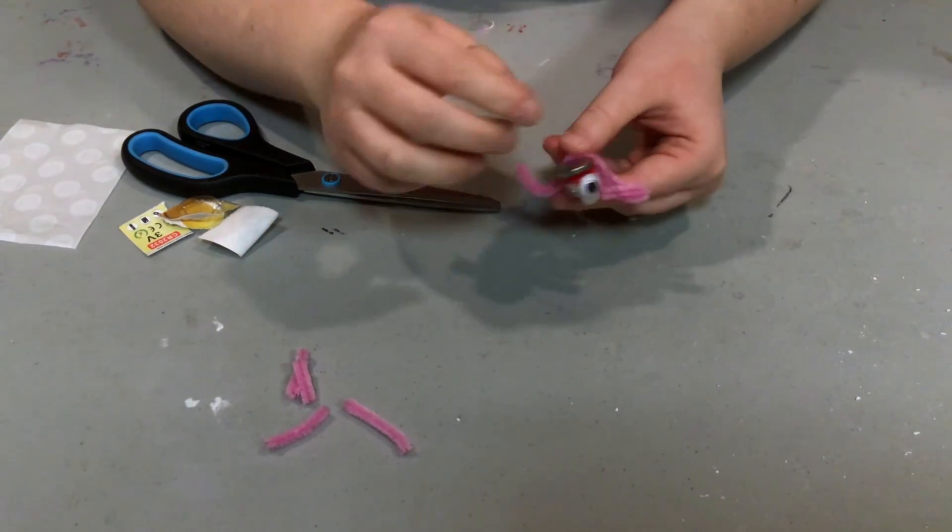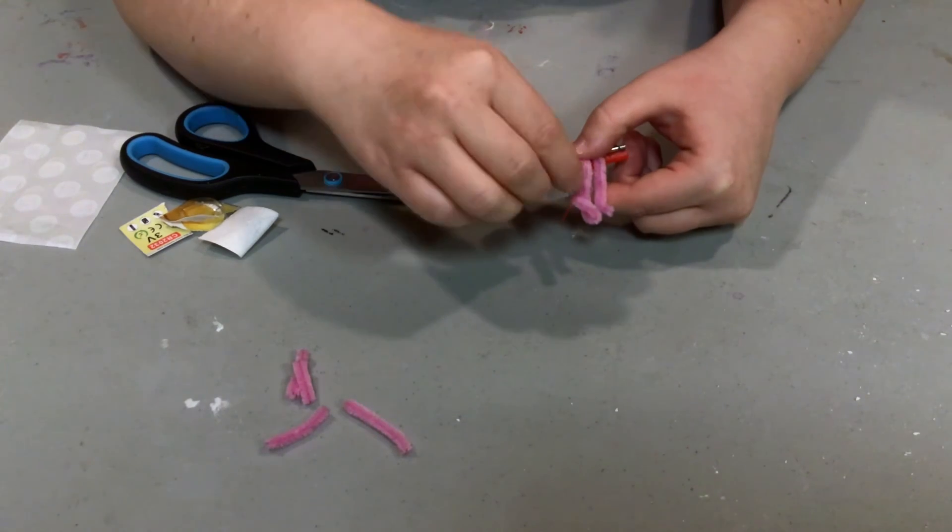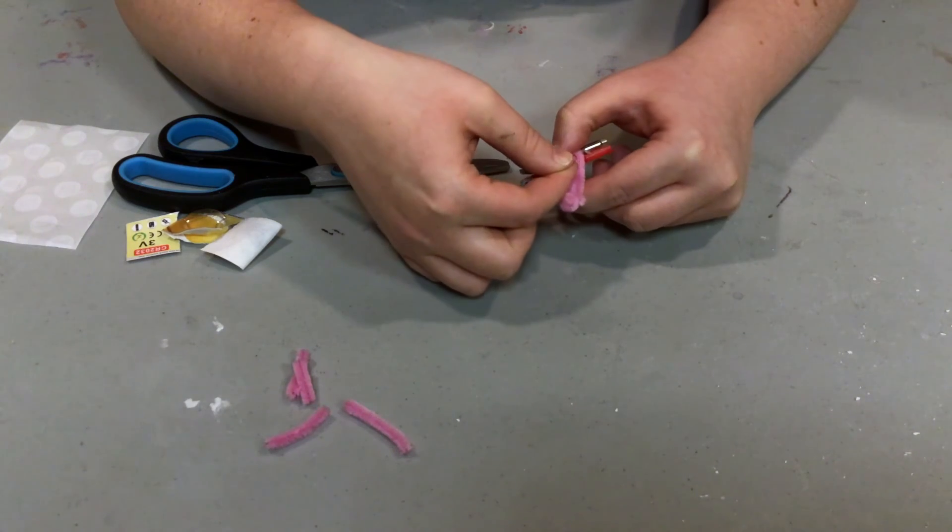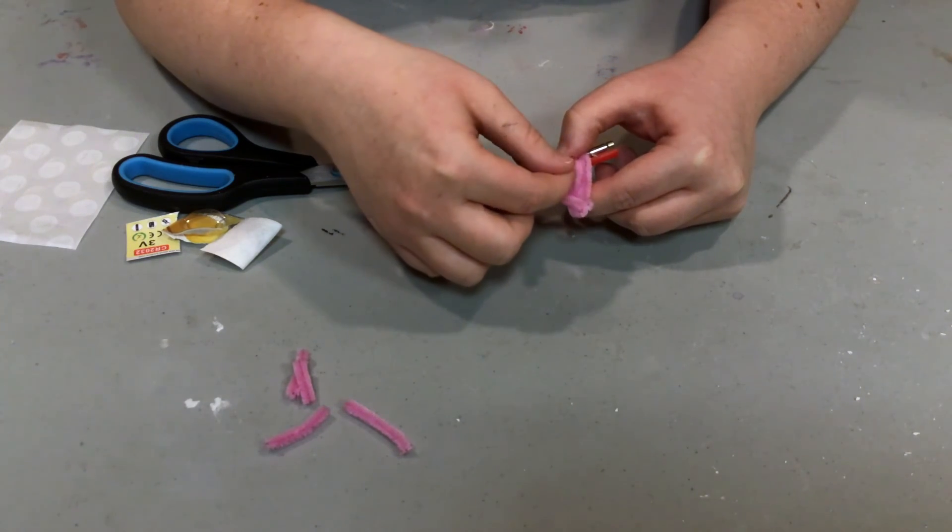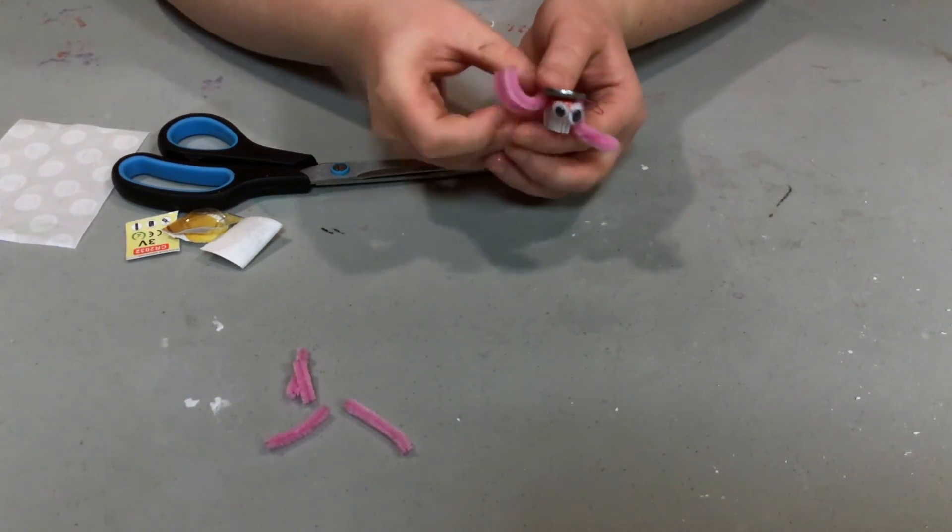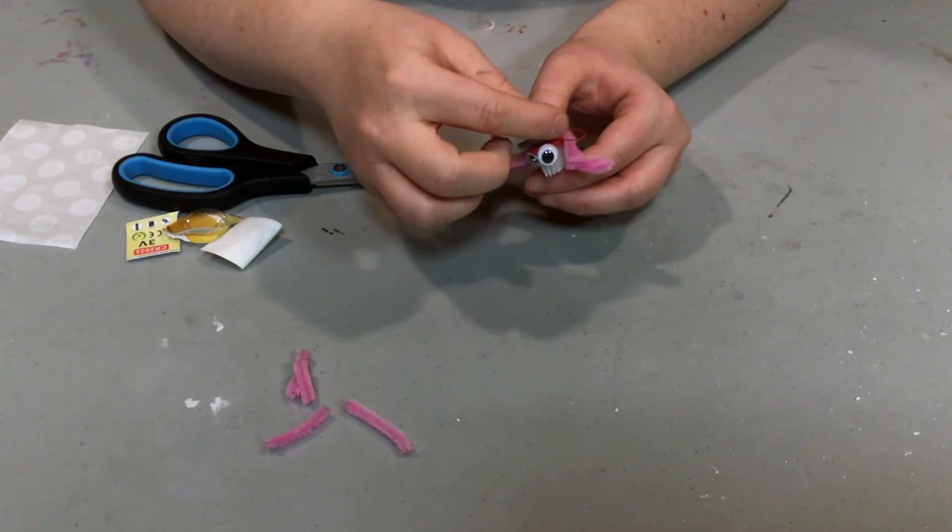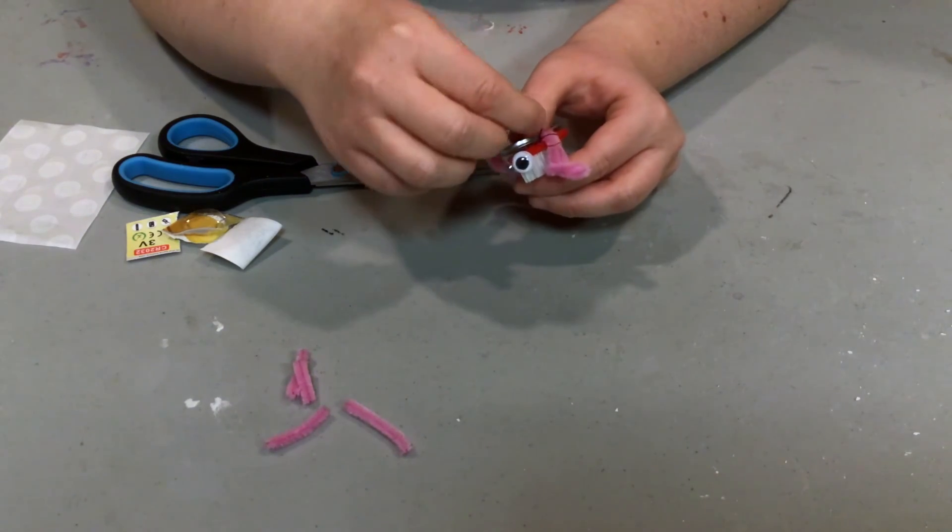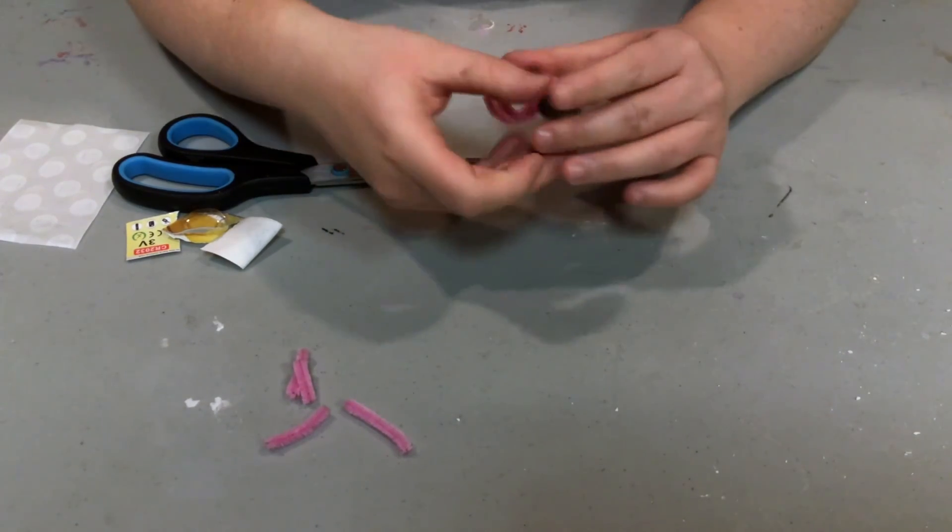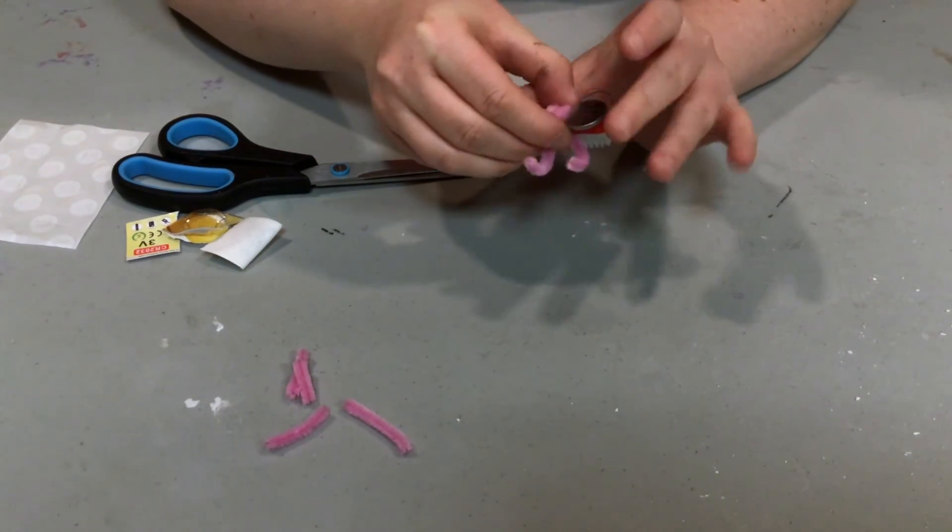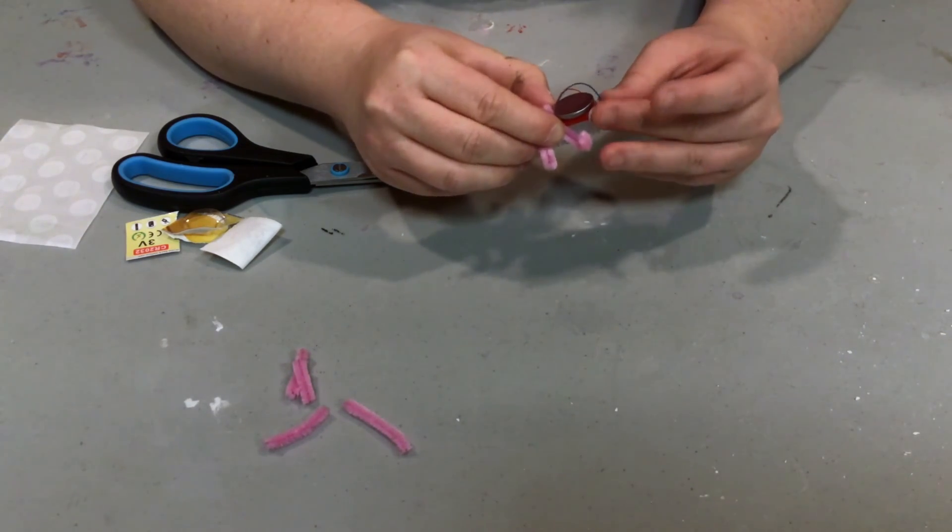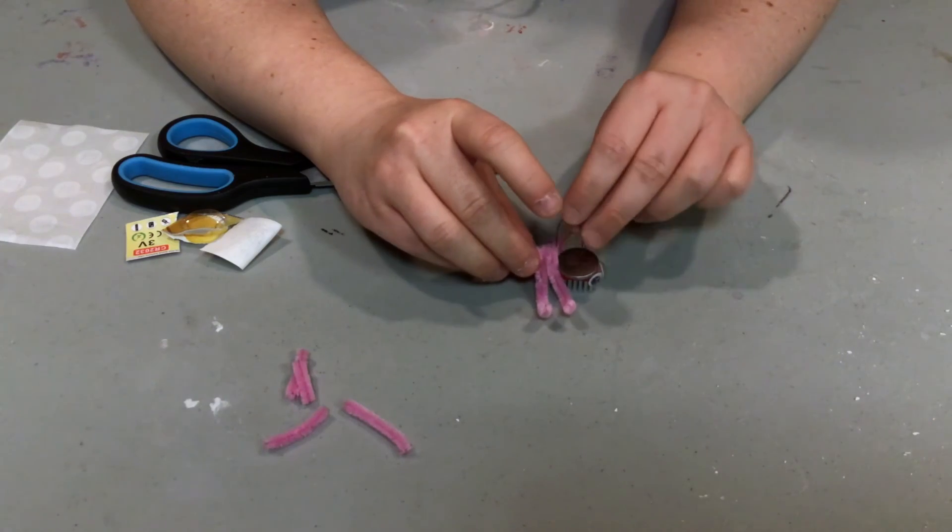Another thing you can do at this point is you can test your wires. So the trick to keeping your Bristol Bot moving is to have one wire touching the top of the battery and one wire touching the bottom or the side of the wire at the same time. And you can use your pipe cleaners to kind of help your batteries stay in place. Your wires stay in place on the battery.